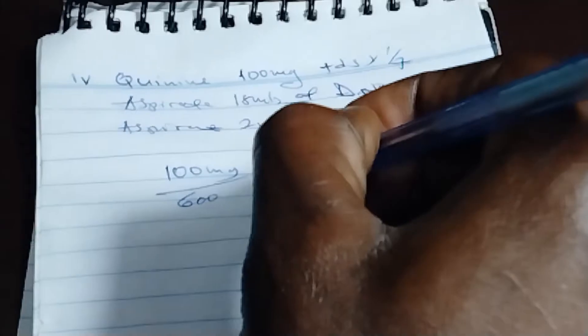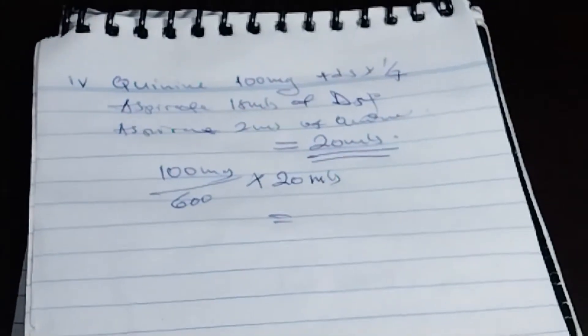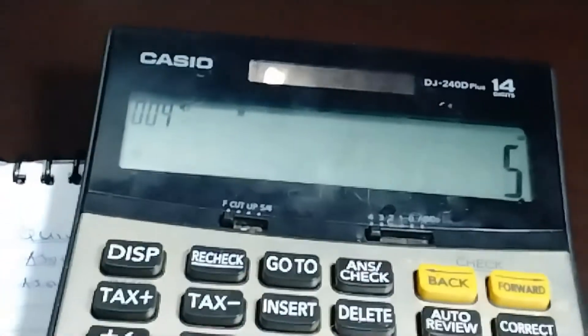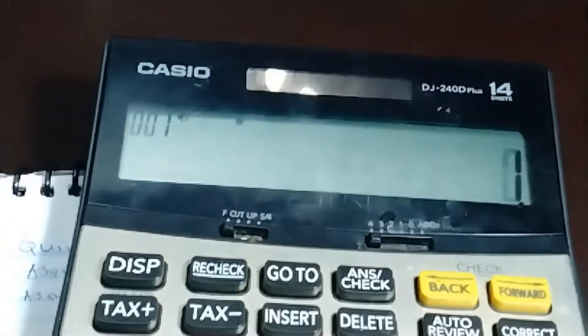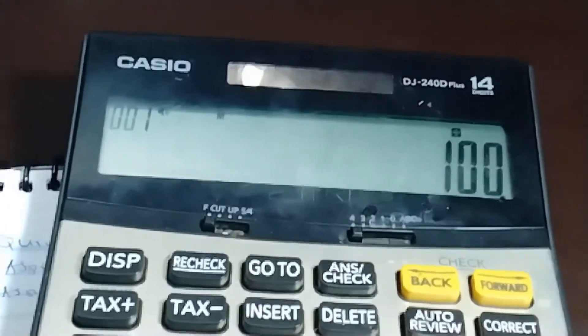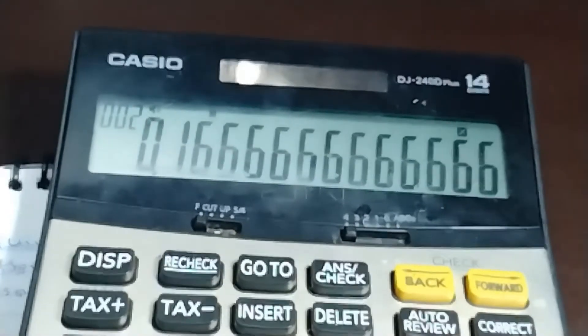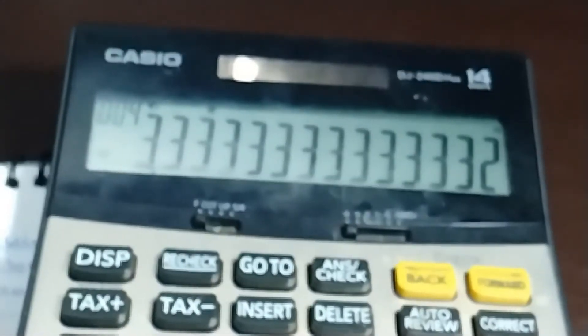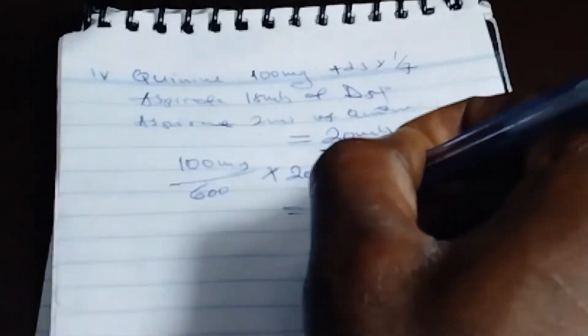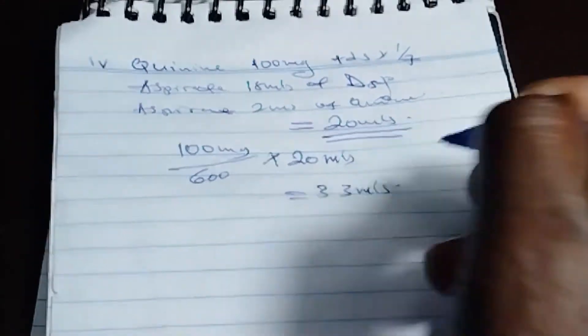It is 100 divided by 600 times 20. That is 3.3, 3.3 mL.